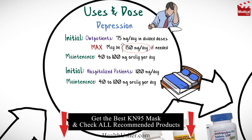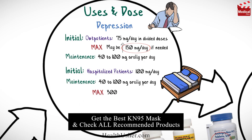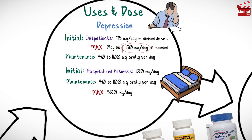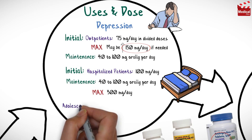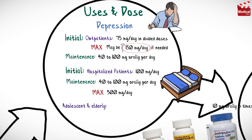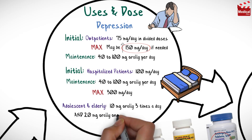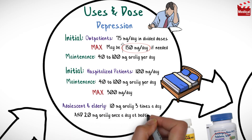The usual initial dosage for hospitalized patients is 100 milligrams per day. The maintenance dose is 40 to 100 milligrams as a single dose at bedtime, and the maximum dose is 300 milligrams per day. The usual dosage for adolescent and elderly patients is 10 mg three times a day and 20 mg once a day at bedtime.